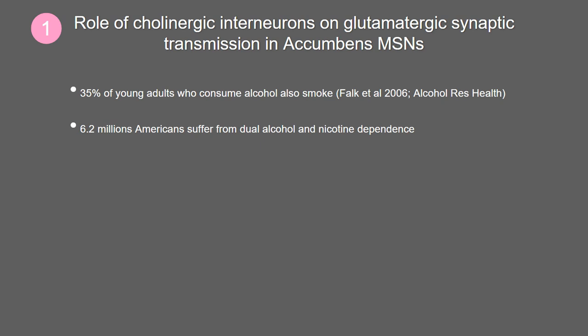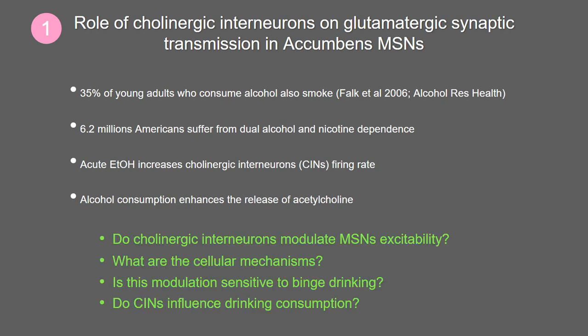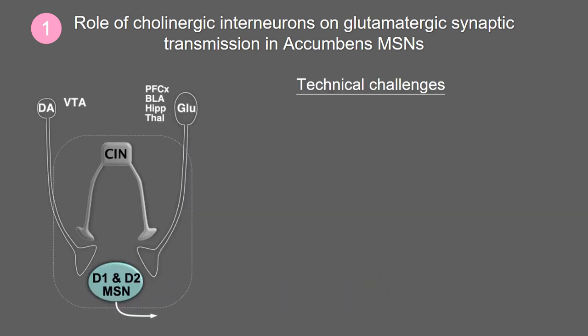Why should we care about cholinergic synaptic transmission and alcohol? From an epidemiological standpoint, we know that a large number of adults — 35% — consume alcohol and also smoke, and more than 6 million Americans suffer from dual alcohol and nicotine dependence. Functionally, acute alcohol really does change the excitability of cholinergic interneurons, resulting in an increase in the release of acetylcholine in the nucleus accumbens. However, a number of outstanding questions remain: do cholinergic interneurons modulate MSN excitability directly and indirectly? What are the cellular mechanisms? Is this modulation sensitive to binge drinking? And do cholinergic interneurons influence drinking consumption?